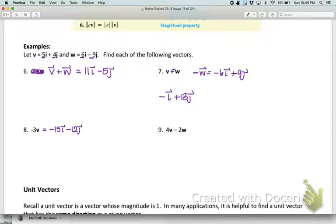For 9, you're going to have to do probably a couple of steps. First we need to figure out what 4v is and what -2w is. Then once we have those two vectors, you can go ahead and do the subtraction. Hit pause, give me about 3 seconds, and the answer will be here.